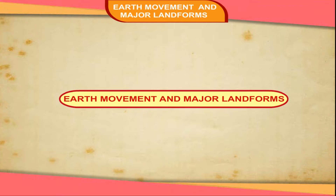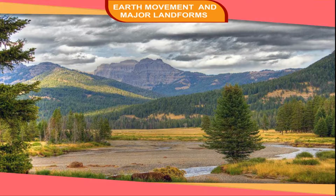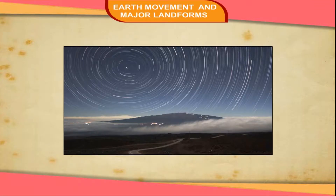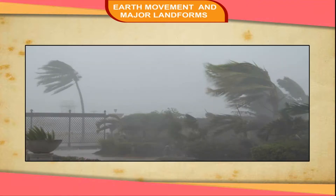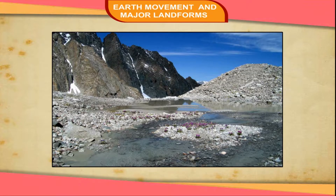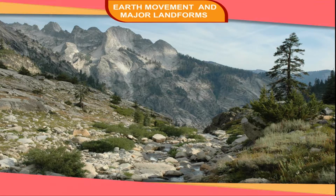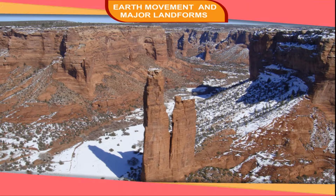Earth Movements and Major Landforms. The Earth's surface is highly uneven and irregular. The surface of the Earth is being shaped and reshaped by external agents like running water, wind, glaciers, etc. This is the reason why our present-day landforms are diverse and varied. What we see today on the surface of Earth is the product of millions of years of geological change.